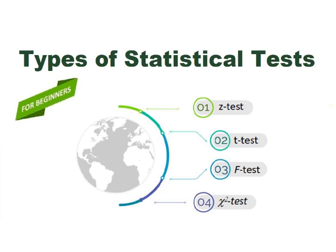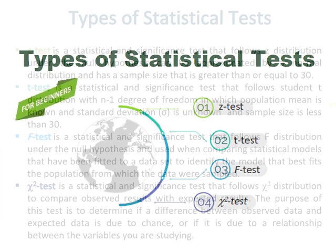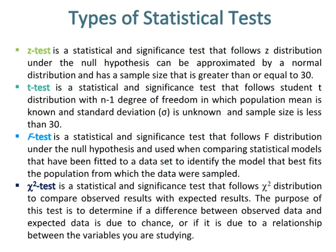Types of statistical tests. Z-test is a statistical and significance test that follows Z-distribution under the null hypothesis, can be approximated by a normal distribution, and has a sample size that is greater than or equal to 30.